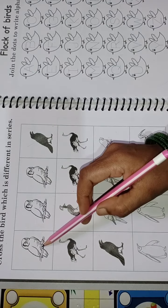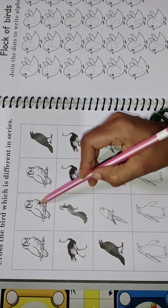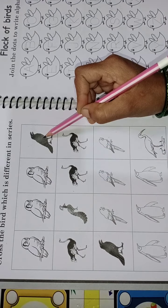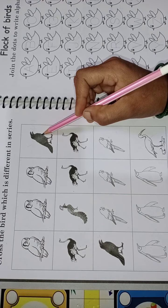Okay, what is this? Owl. And this is also an owl. What is this? This is also an owl. And this picture is different. Which bird is this? Crow.